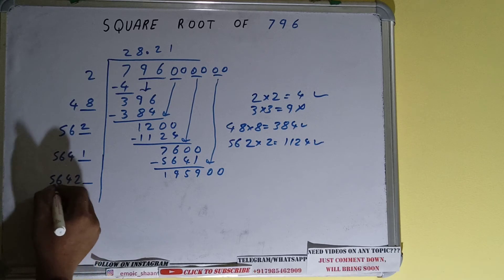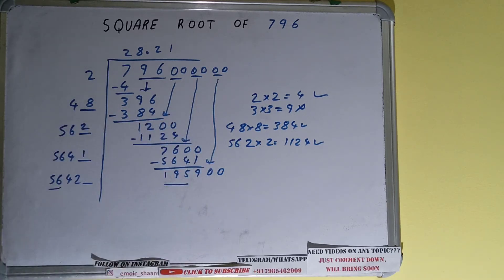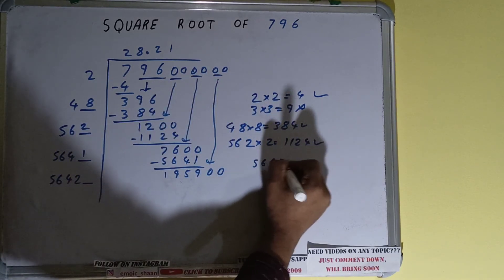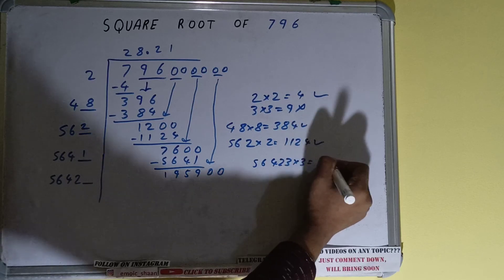Now we can compare this 56 with this 195. So 56 times 3 is 168. So we can try 3 times. 56423 times 3 we can try.